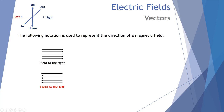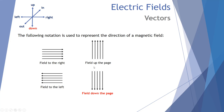Likewise, arrows straight up represent a field up the page, and straight down for a field down the page. It gets trickier to draw lines coming out of the page or into the page — out of your screen or into your screen. Let's look at the notation we use for those cases.